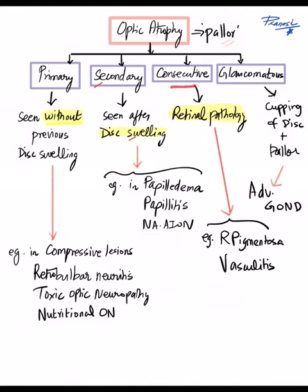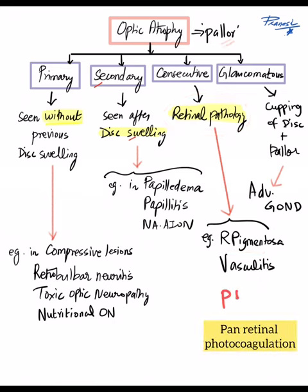Whereas in consecutive optic atrophy, there is going to be a retinal pathology, such as retinitis pigmentosa, vasculitis, or post pan-retinal photocoagulation. In these conditions, you will have a consecutive optic atrophy.